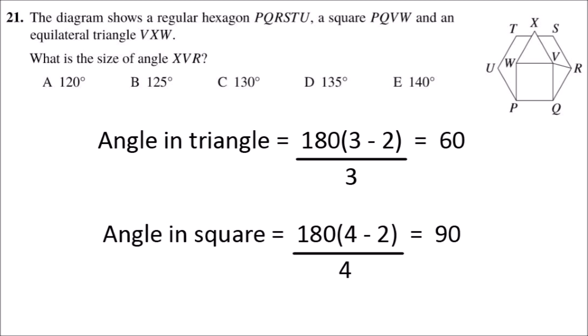Next, the angle in the square is 360 divided by 4, which is 90 degrees.